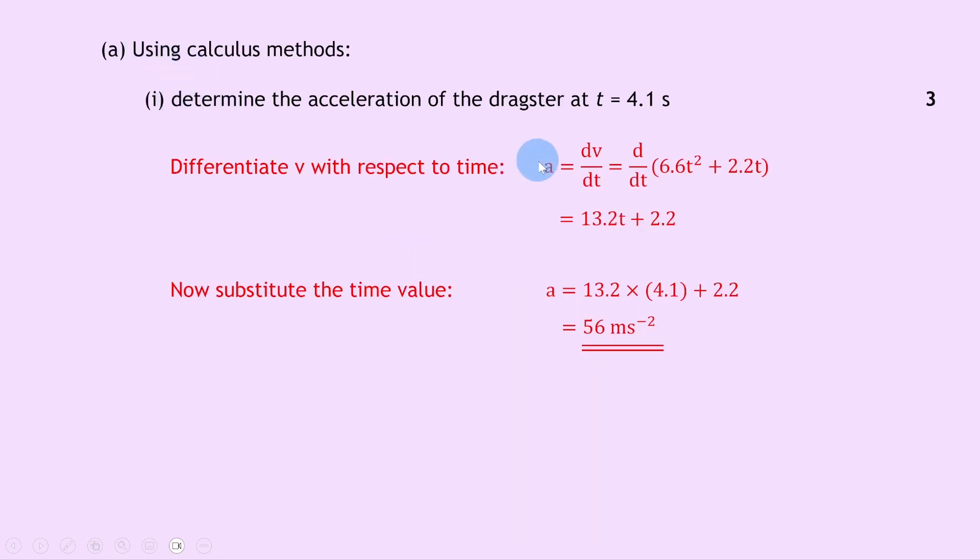If we go back to part 1, we obtained an expression for acceleration in terms of time. It was a equals 13.2t plus 2.2, which tells us that acceleration is not constant, it depends on time t. If you were to sub in time values between 0 and 4.1 here, you would be able to see how the acceleration changes over time.